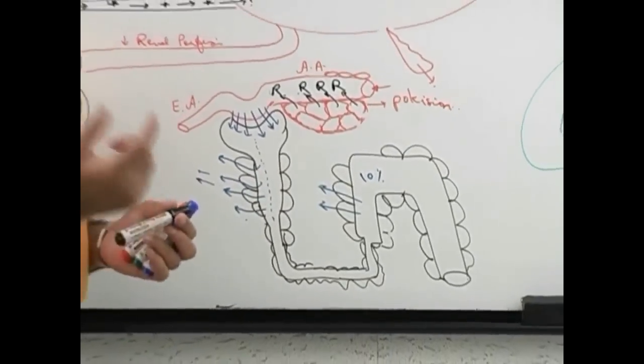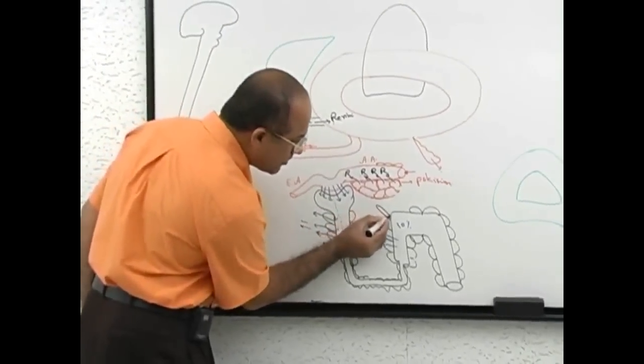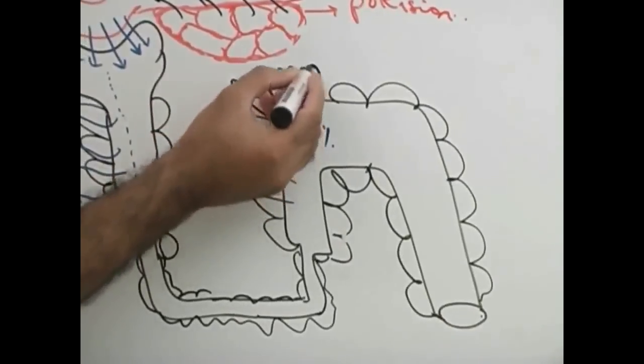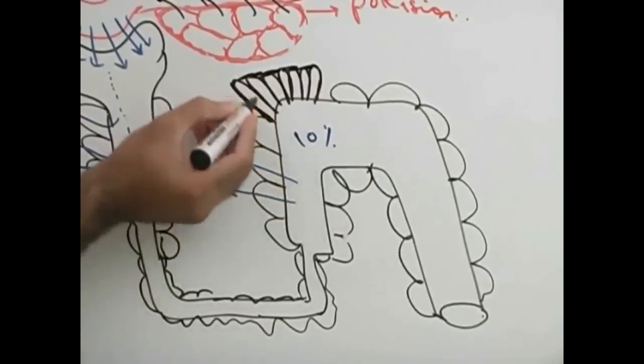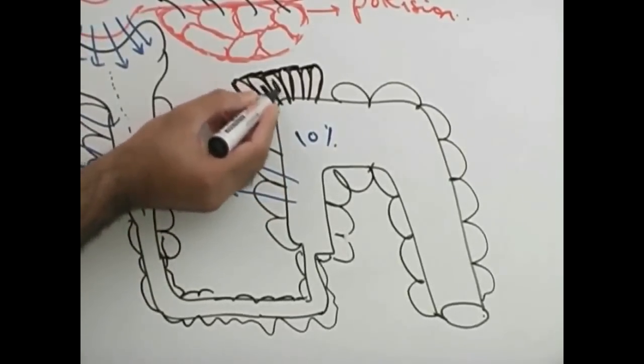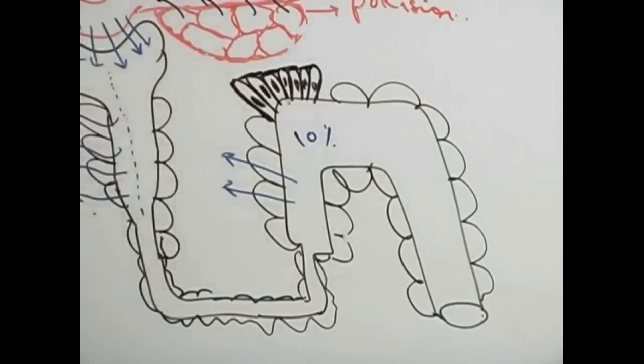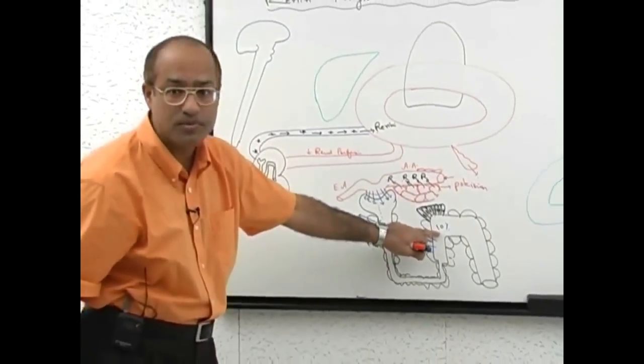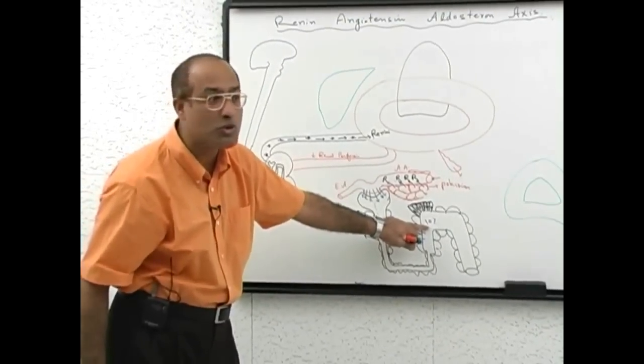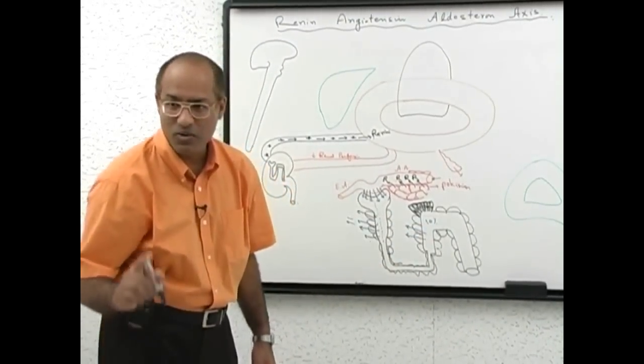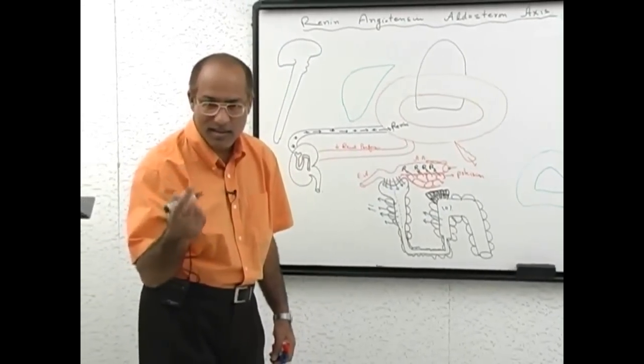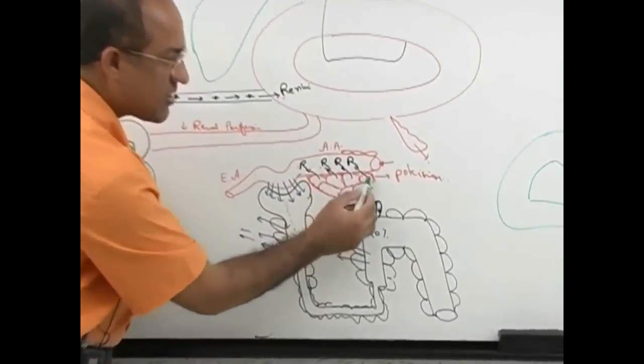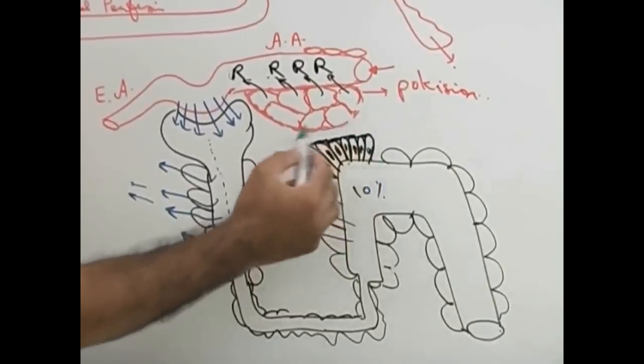Here nature has put a very beautiful system. There are some cells here which are very slightly modified structure, this group of cells. Here the nephron cells are somewhat modified. These are tall, these are dark looking and these cells love to taste the fluid here. These cells are sensitive to sodium. They are sodium sensors.